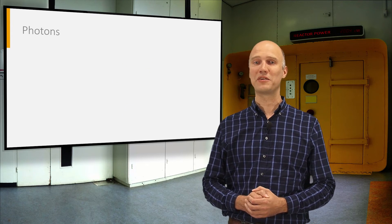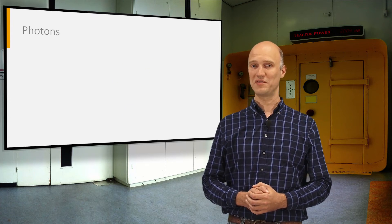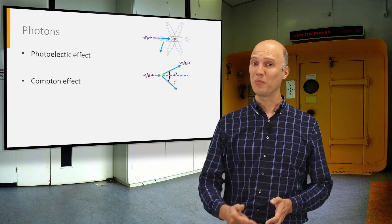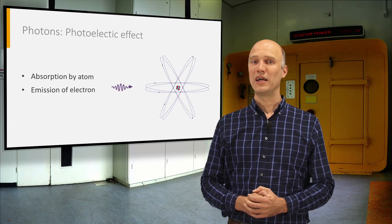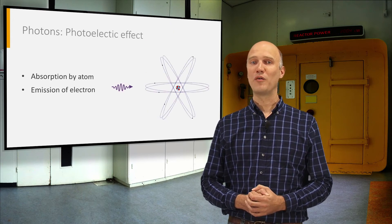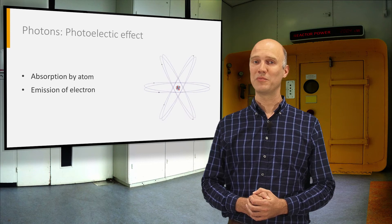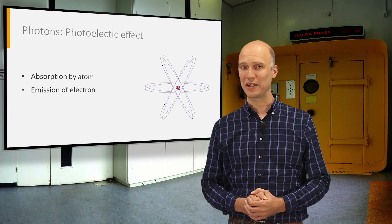Photons interact with matter through three main processes: the photoelectric effect, the Compton effect, and pair production. In the photoelectric effect, a photon is absorbed by an atom, which in turn emits a bound electron.